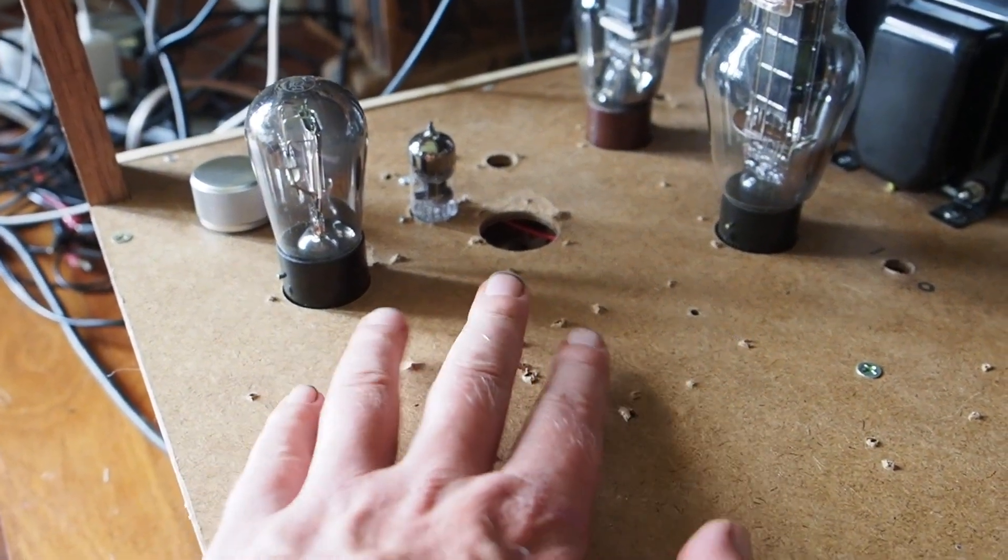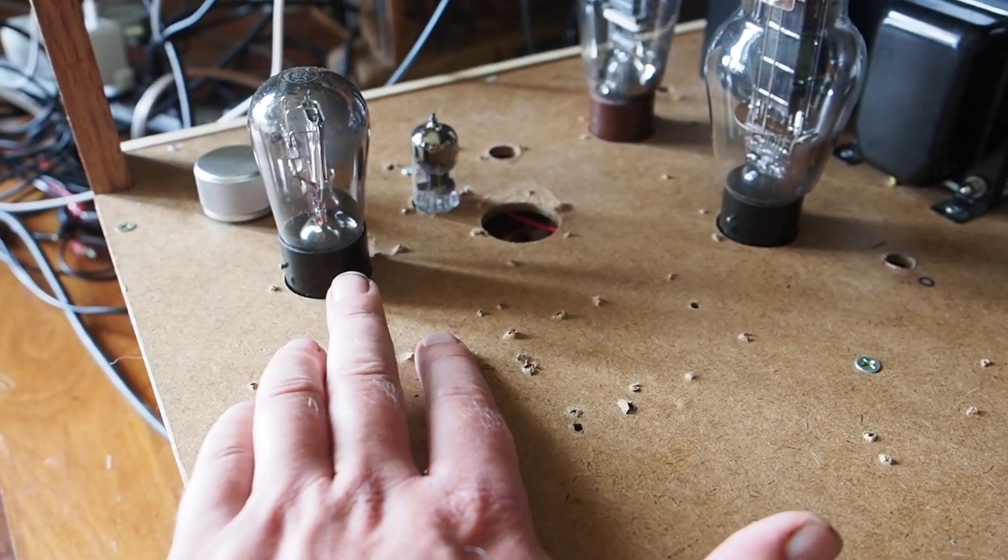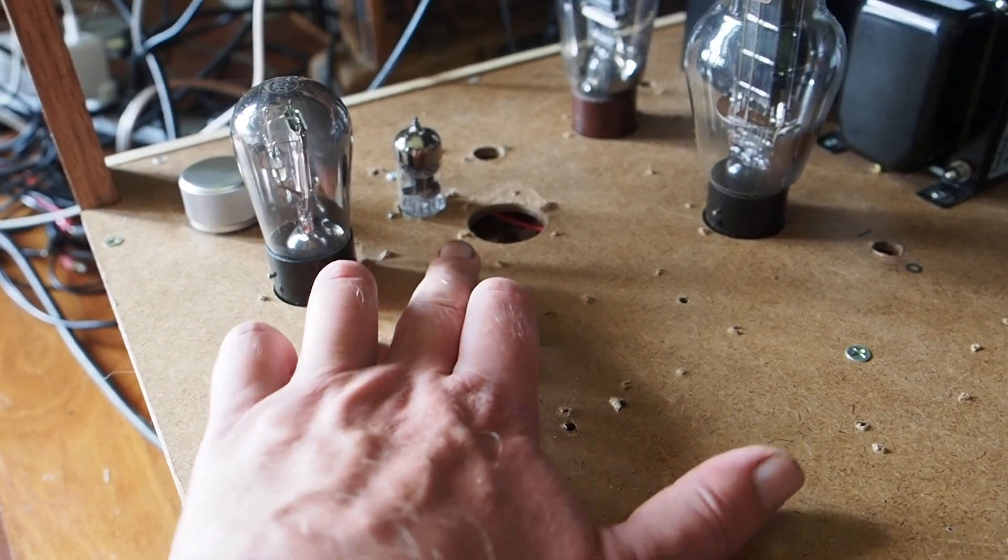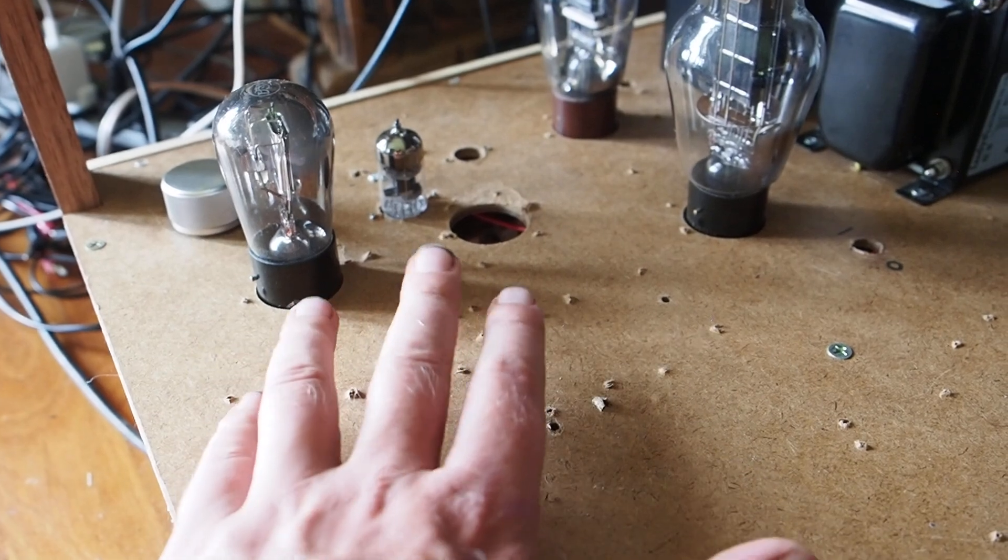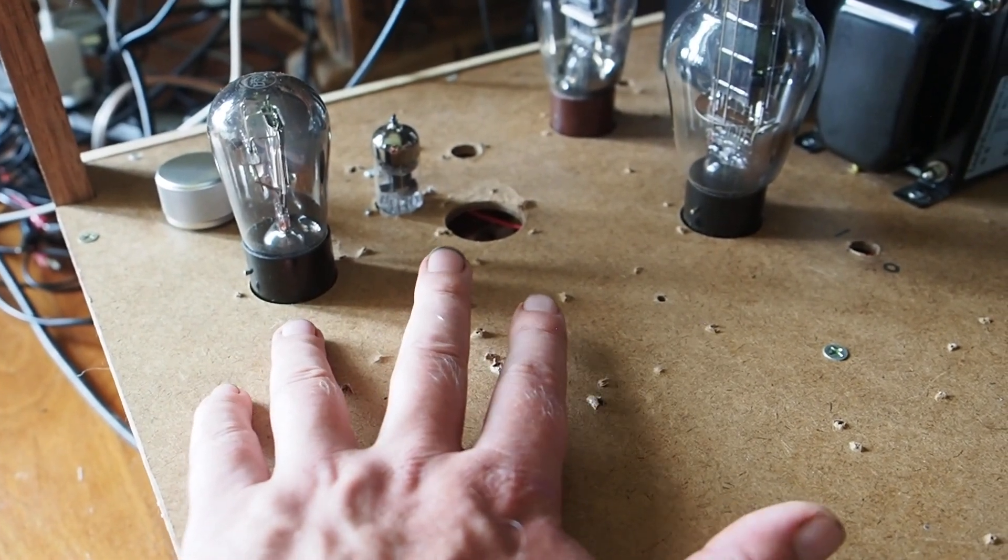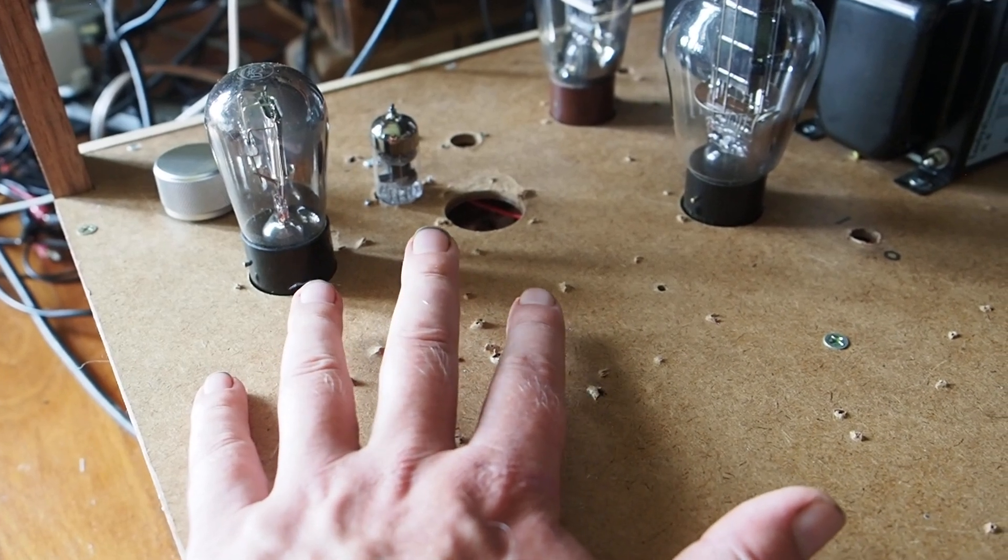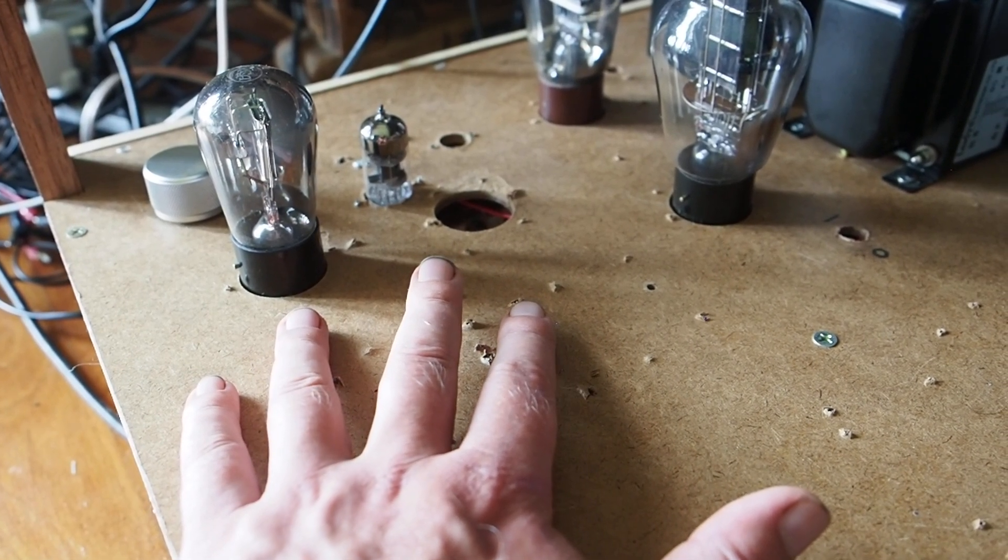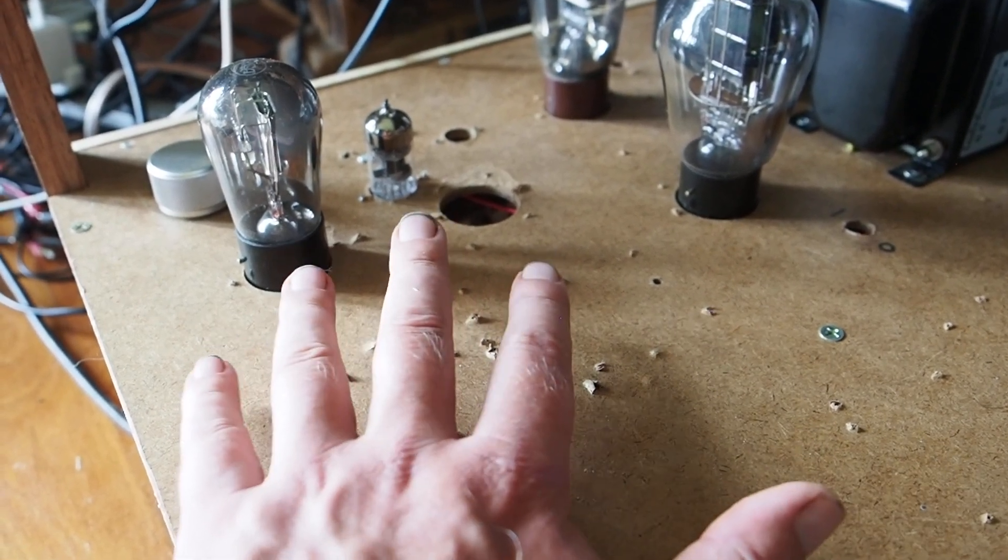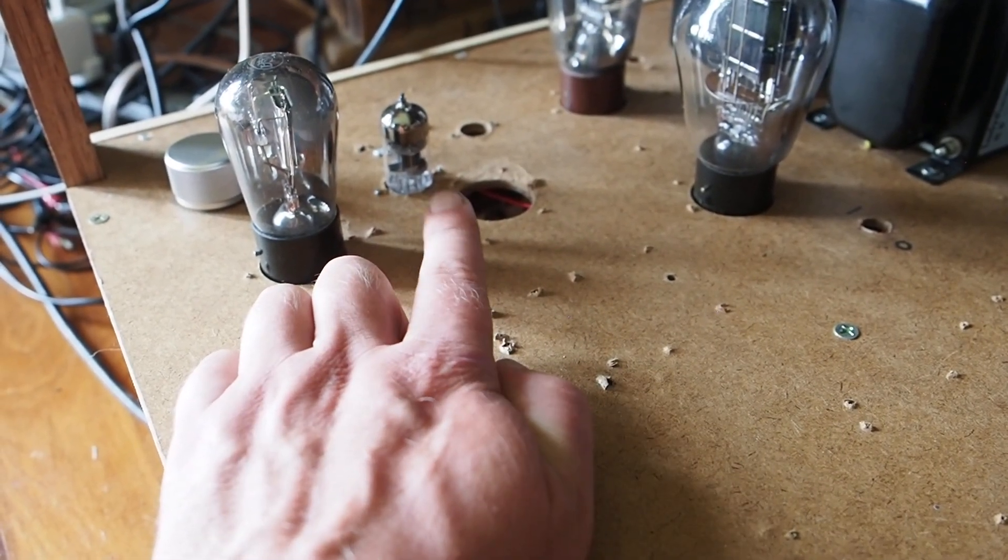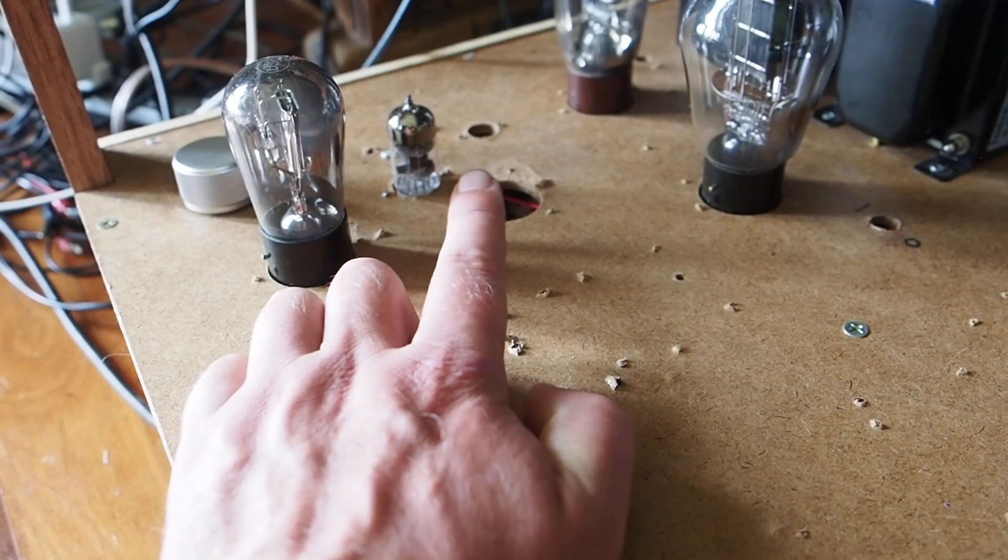In my amp I actually use filament bias for the directly heated tube and also for the indirectly heated tube, and it has big advantages mainly in sound quality because we actually eliminate a capacitor from the signal path. However, we can also reduce the size of the grid stopper and prevent any oscillations from happening.